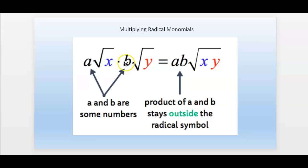In this case, a and b are some numbers. They're coefficients in front of these radicals. You just multiply the a and b together, of course, and multiply the x and y together underneath the same radical sign.